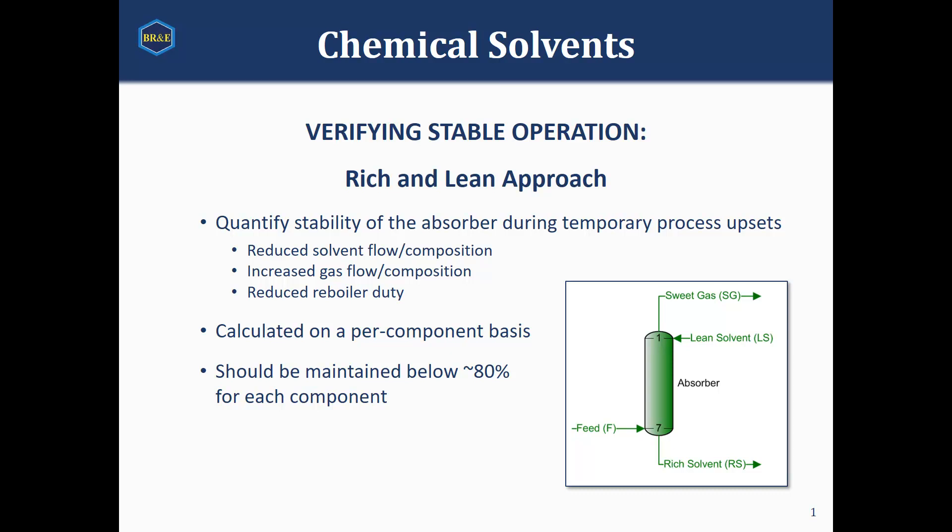We can calculate the rich and lean approach for individual components, and so I'll talk mostly about calculating this for H2S, but you could do the same calculations for CO2. And the guideline we will give is that we want to keep these approaches below 80% for each of these components.